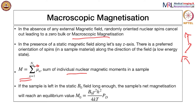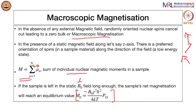There is actually an expression for this. If you leave a particular sample in a static magnetic field B0 long enough, the individual magnetic spins orient along the direction of the field. We have an expression for M0. What is more important here is that M0 depends on the strength of the applied static magnetic field B0. It also depends on what is called PD — proton density — which is the density of hydrogen atom protons.